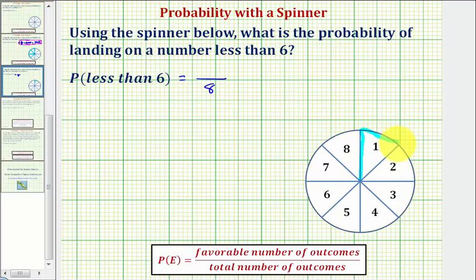One, two, three, four, and five are all less than six. So these are the favorable outcomes. Notice there are five favorable outcomes.